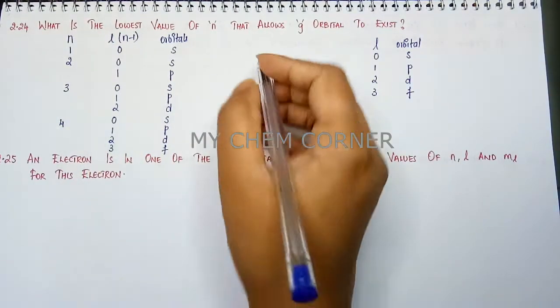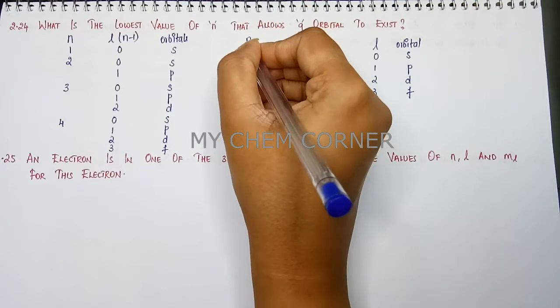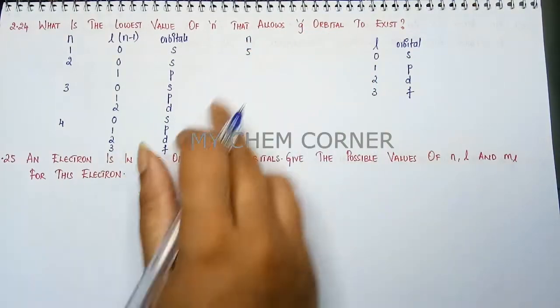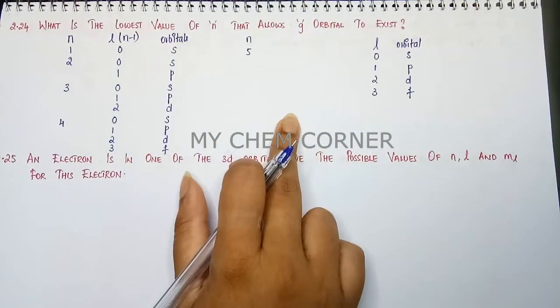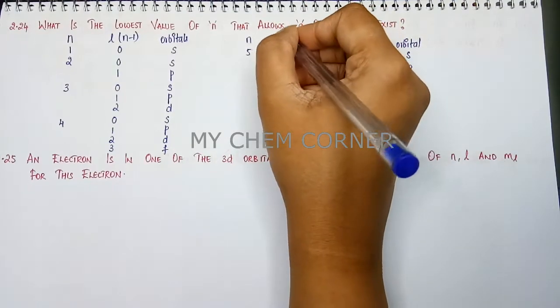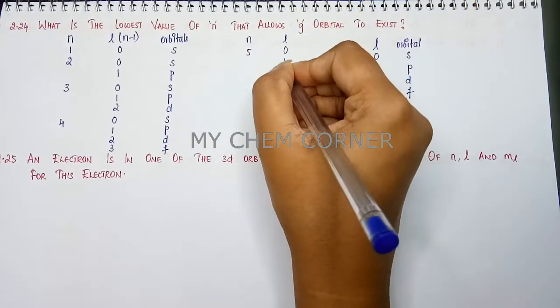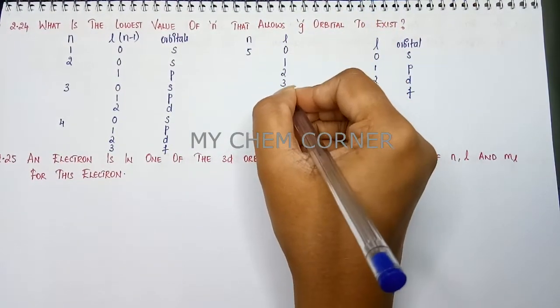Let's move to the next state which is n equals 5. Now when n equals 5 you need to get 5 more values for l. So l will be 0, 1, 2, 3 and 4.